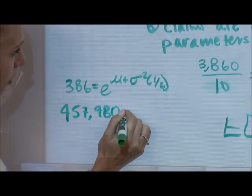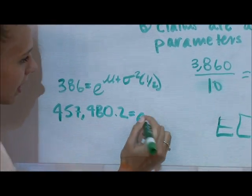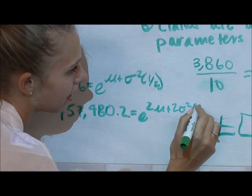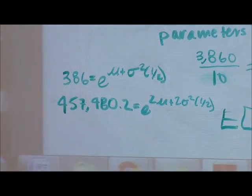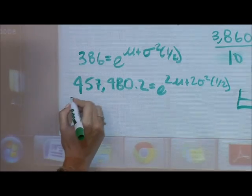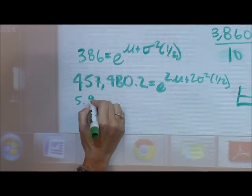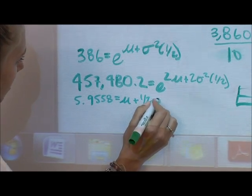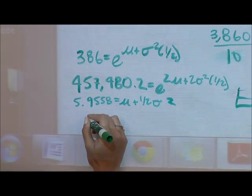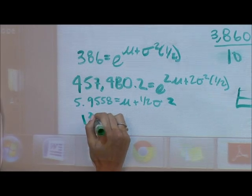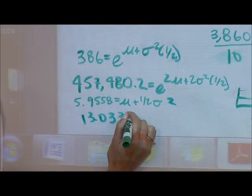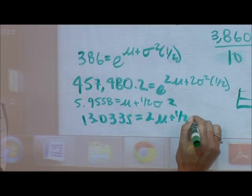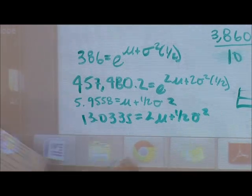If you take the natural log of both sides, you get 5.9558 equals mu plus one-half sigma squared, and 13.0335 equals 2 mu plus one-half sigma squared times 2.